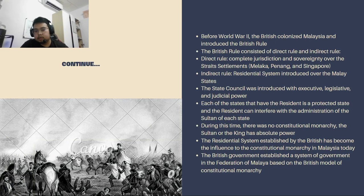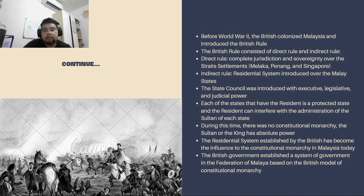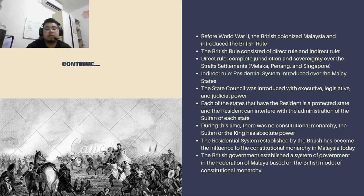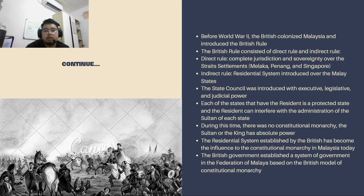Before World War II, the British colonised Malaysia and introduced the British rule, which consists of direct rule and indirect rule. The direct rule meant they had complete jurisdiction and sovereignty of the Straits Settlements, which comprised Malacca, Penang and Singapore. The governor of the Straits Settlements acted under the authority of the Secretary of State for the Colonies, who in turn was responsible to the British Parliament. The indirect rule introduced the Resident system over the Malay states, along with a State Council with executive, legislative and judicial power. Each state with a Resident was a protected state, and the Resident could interfere with the administration of the Sultan. During this time, there was no constitutional monarchy — the Sultan had absolute power. However, the establishment of the Resident system became an influence on the constitutional monarchy in our country today.